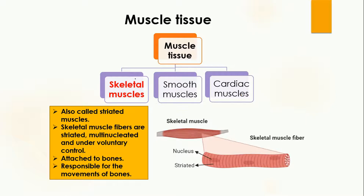Let's study them one by one. The first one is skeletal muscle. The skeletal muscles are also called striated muscles. Striated refers to the long thin parallel lines which are present on the cells, so because of the presence of these parallel lines they are called striated muscles.